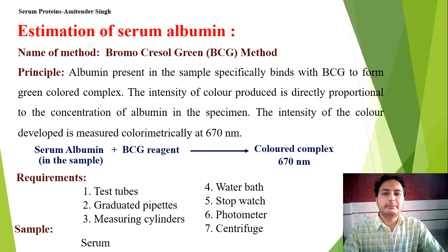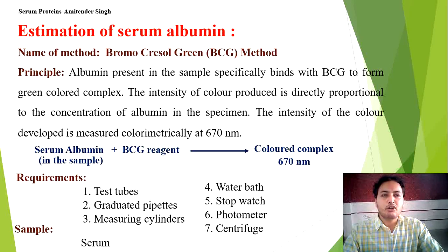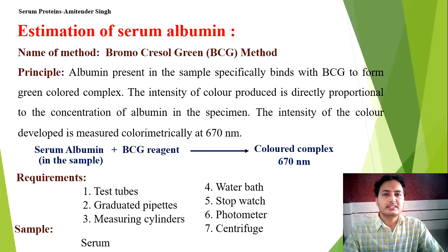To estimate serum albumin, the method used is the BCG method — bromo-cresol green method. Its principle is that albumin in the sample specifically binds to BCG reagent and forms a green-colored complex. The intensity of this complex is directly proportional to the concentration of albumin in the sample, and it is measured at 670 nanometers. This range is 640 to 670 nm — you may find 640, 630, or 670 nm depending on the source. The sample used is serum.